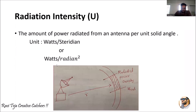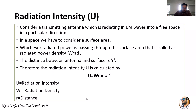The distance between the antenna and the surface we have selected is given by r. So the distance between the antenna and the area or surface can be considered as r. Radiation intensity U is calculated as U = W_rad × r², where U is the radiation intensity, W_rad is the radiated power density at that surface area, and r is the distance. W_rad can also be called radiation density.